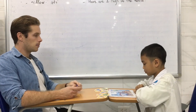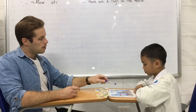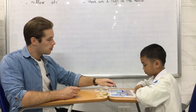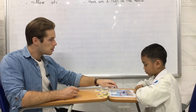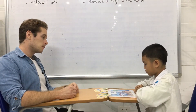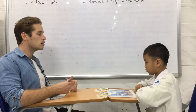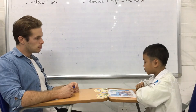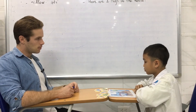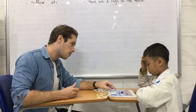Where is the milk? The milk is on the table, or the milk is between the cup and the fruit. Where is the red chair? The red chair is next to the table. Next to the table.